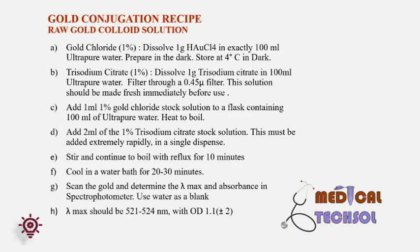C. Add 1 ml of 1% gold chloride stock solution to a flask containing 100 ml of ultrapure water. Heat to boil. D. Once boiling vigorously, add 2 ml of 1% trisodium citrate stock solution — this must be added extremely rapidly in a single dispense. E. Stir and continue to boil with a 10-minute reflux. F. Cool in a water bath for 20–30 minutes. G. Scan the gold and determine the lambda max and absorbance in the spectrophotometer. Lambda max should be 521 to 524 nm with absorbance 1.1 ± 0.2.